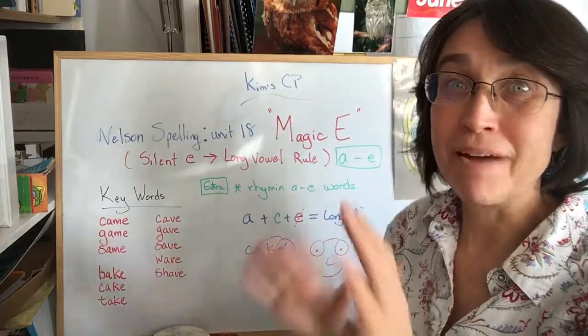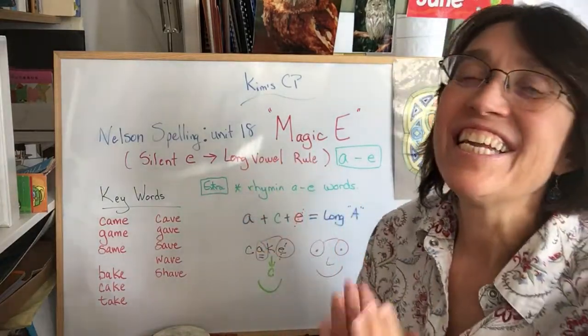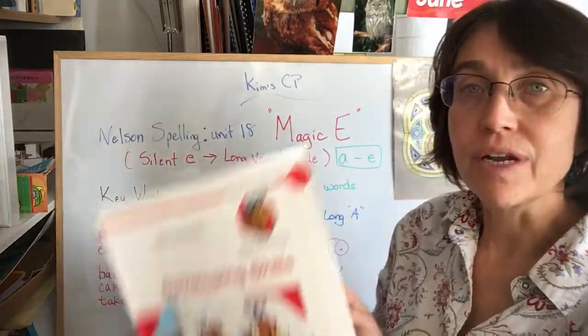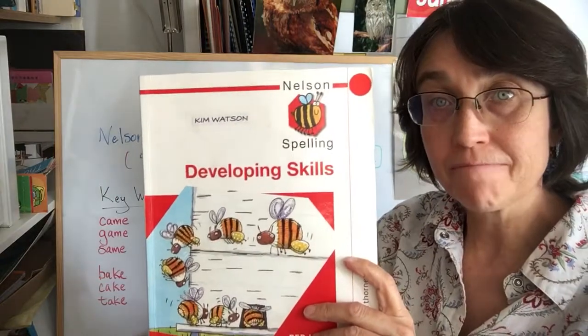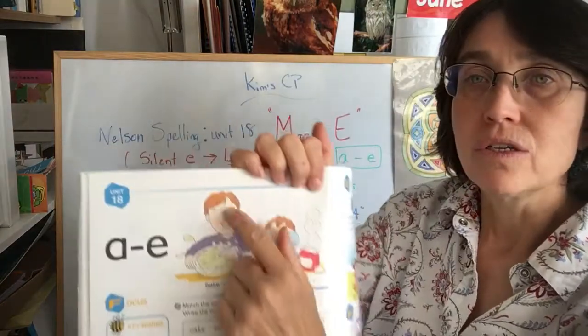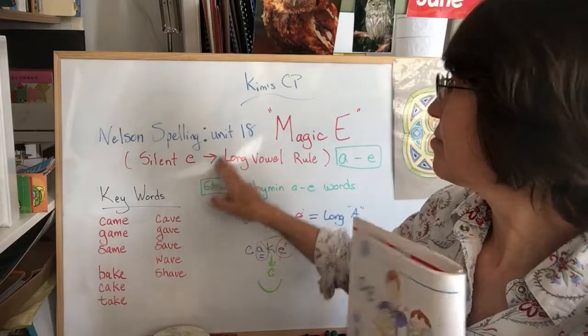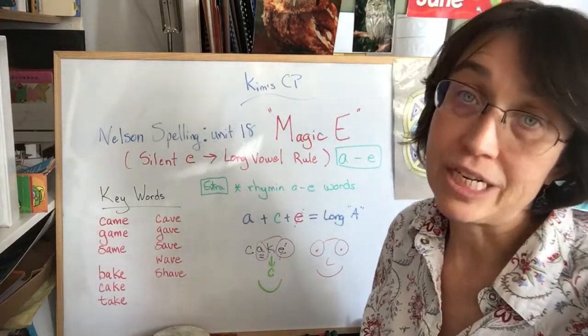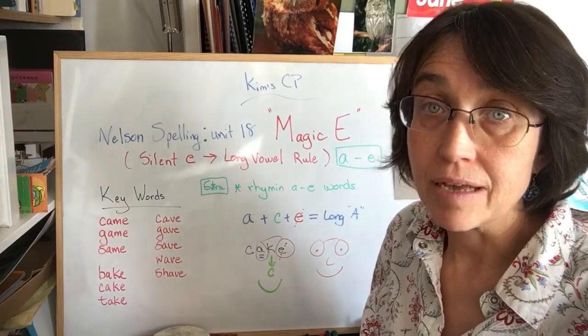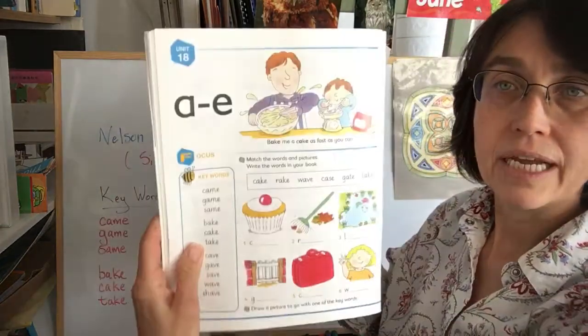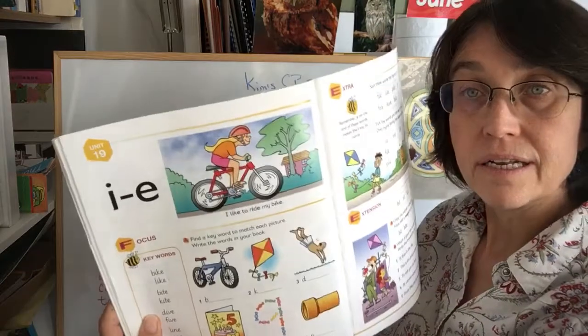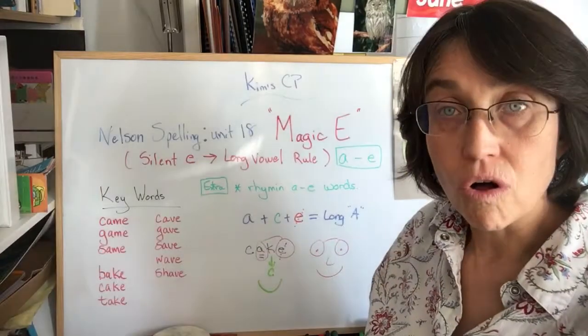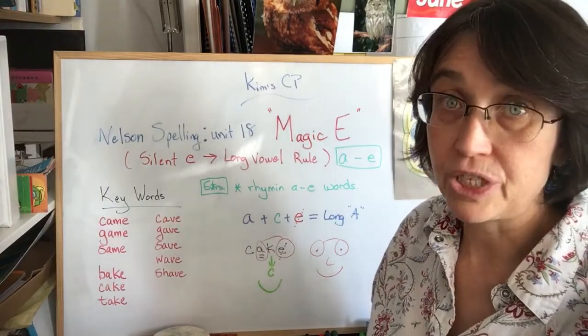Hello everybody! Back again! Now, in this video we will work again in our red level Nelson spelling on unit 18 and we're going to work on the spelling rule called Magic E. Actually unit 18, 19, and 20 all work on the Magic E rule.